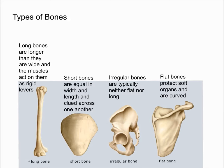Finally, the last type of bone we're going to talk about are flat bones. These bones protect soft organs and are curved, but they're wide and pretty thin. For example, your cranium or skull is made up of flat bones — the top of your head is made up of flat bone.